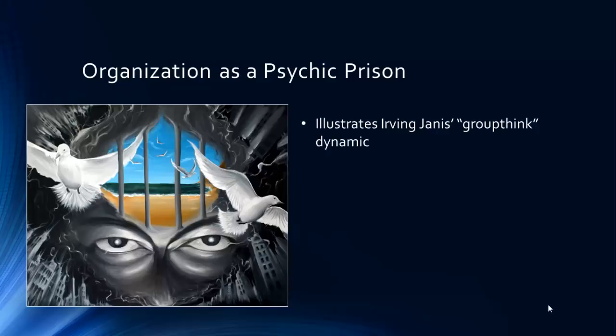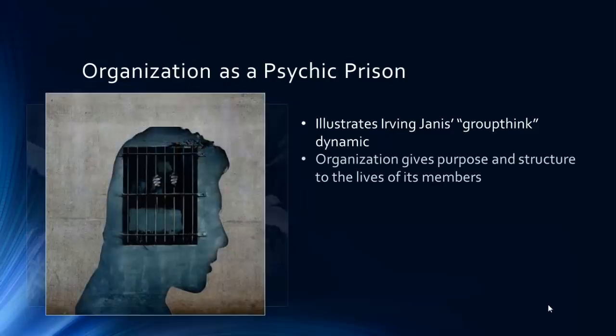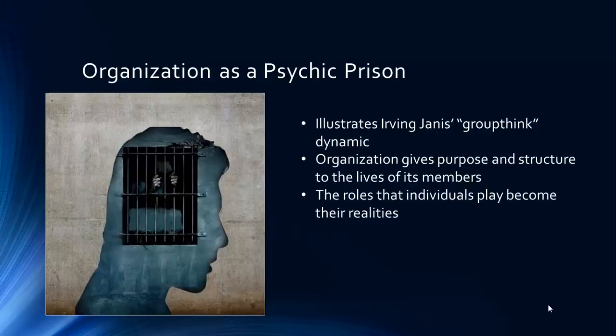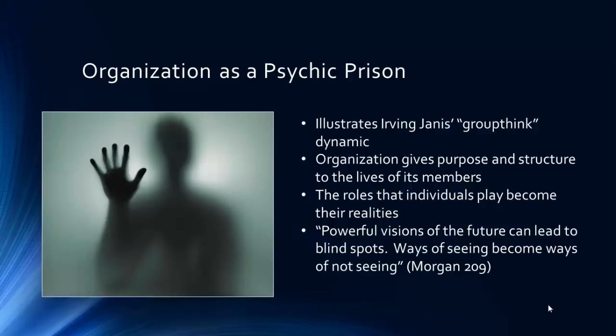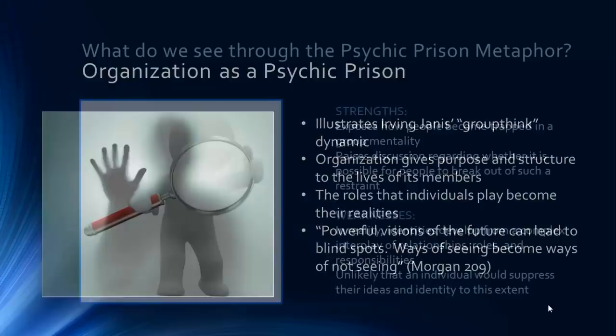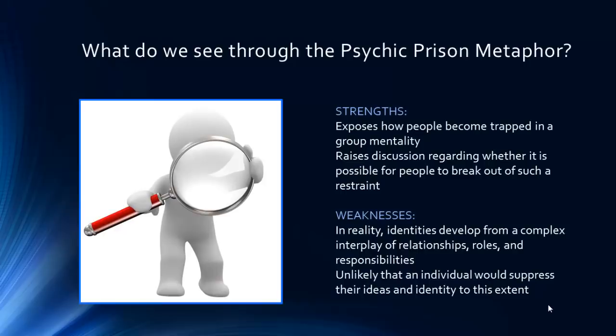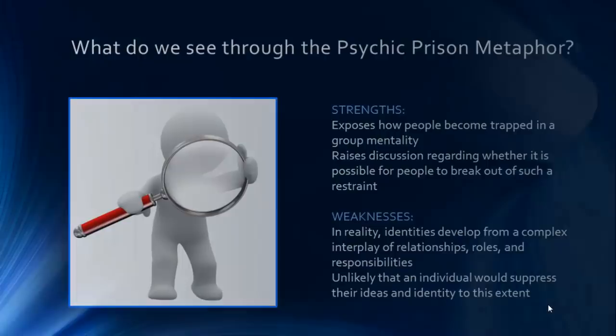The final metaphor we will review is called the psychic prison. This metaphor illustrates Irving Janis' dynamic referred to as groupthink. In this case, the organization gives purpose and structure to the lives of its members, and the roles that individuals play become their realities. Morgan warns that powerful visions of the future can lead to blind spots — ways of seeing become ways of not seeing. A strength of this metaphor is that it can expose how people become trapped in a group mentality and raises discussion regarding whether it is possible for people to break out of such a restraint. A weakness is that, in reality, identities tend to develop from the complex interplay of relationships, roles, and responsibilities one experiences. It is unlikely in modern organizations that an individual would suppress his or her own ideas and identity to the extent that is implied by this metaphor.